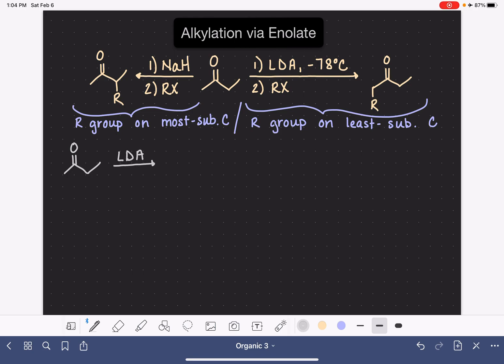Using the LDA base and running the reaction at -78°C, which is the ideal temperature for this reaction, the enolate that is formed is going to be on the least substituted carbon.